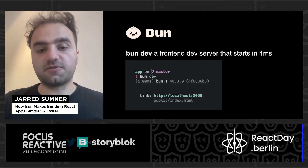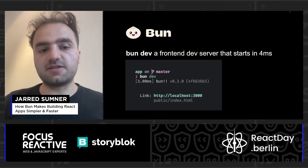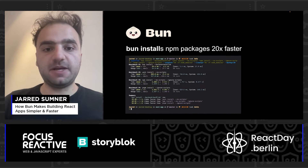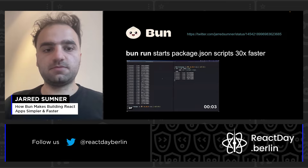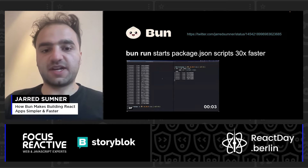Bun dev is a front-end dev server that starts in four milliseconds — it's a command that's built into Bun. Bun install is an NPM package manager that installs NPM packages 20 times faster than any other NPM client that exists today. Bun run is an NPM package.json scripts runner, and it starts package.json scripts 30 times faster than NPM.